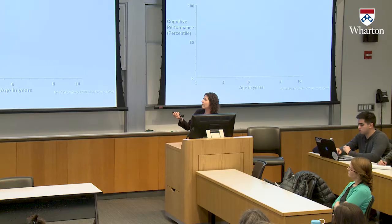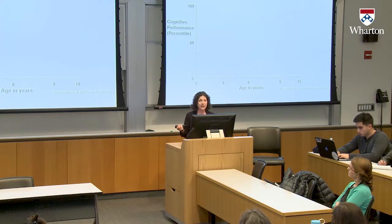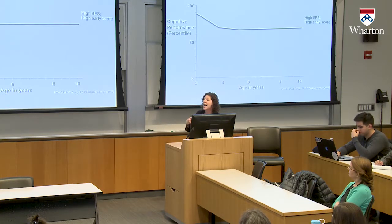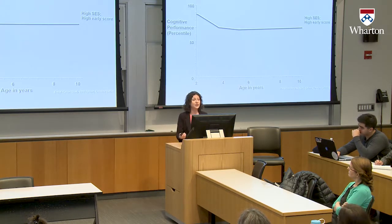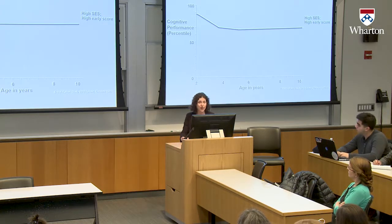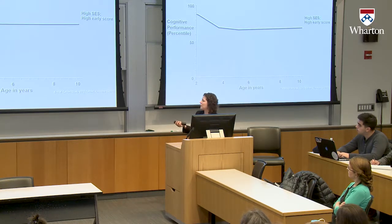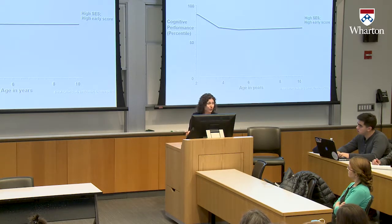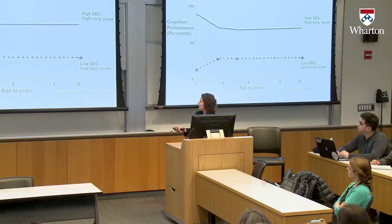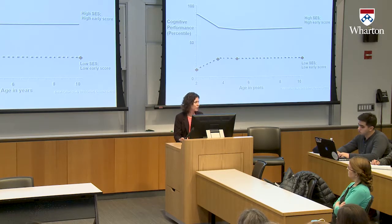Children who at age 2 performed at the 90th percentile — outperforming 90% of other 2-year-olds — and who came from socioeconomically advantaged homes tended to perform above average throughout childhood. Children who started at the 10th percentile at age 2, performing worse than 90% of their peers, and who came from socioeconomically disadvantaged homes tended to perform below average throughout childhood.